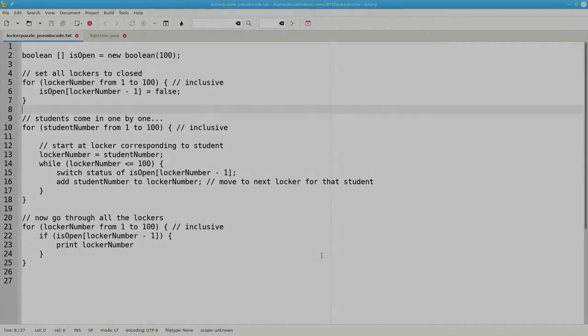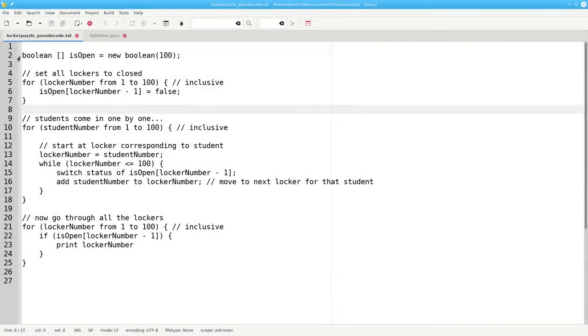And here's the pseudocode. We're going to have an array of booleans called isOpen, and it's going to be 100 long. We'll have to set all the lockers to be closed. We'll have a for loop that runs from 1 to 100 inclusive. The problem here is that our indexes for the isOpen array go from 0 to 99. That means when we actually access the array, we have to subtract 1 so that we don't go out of bounds.